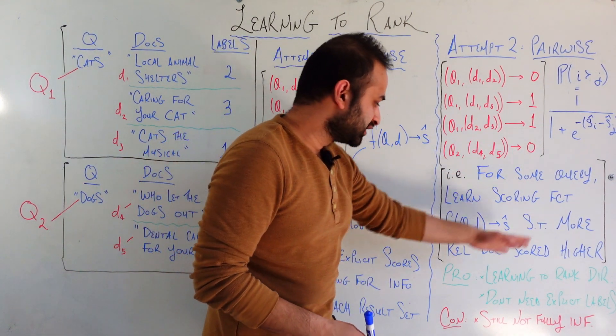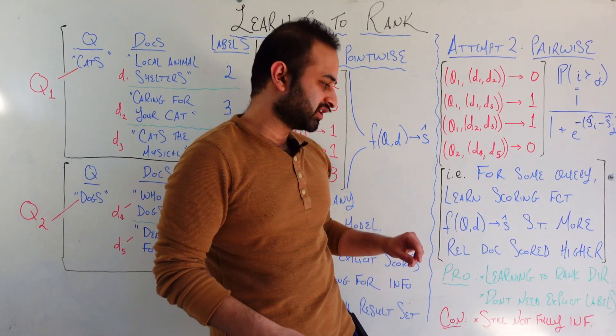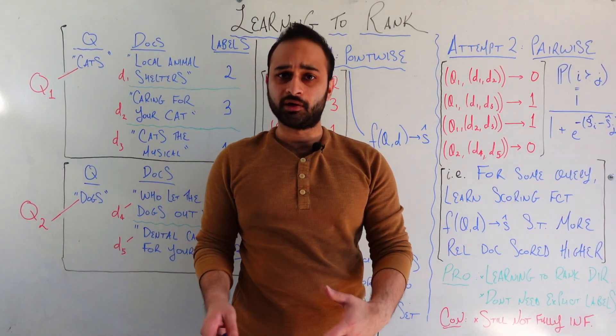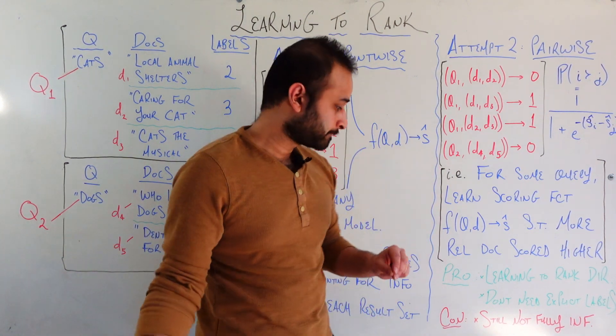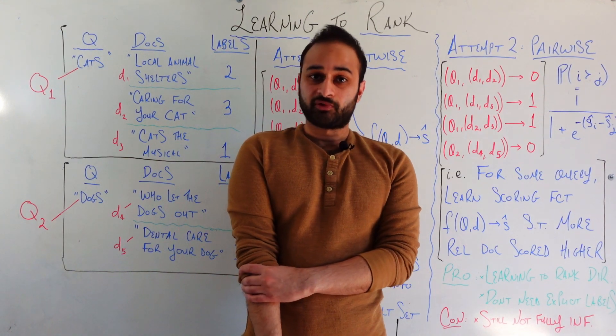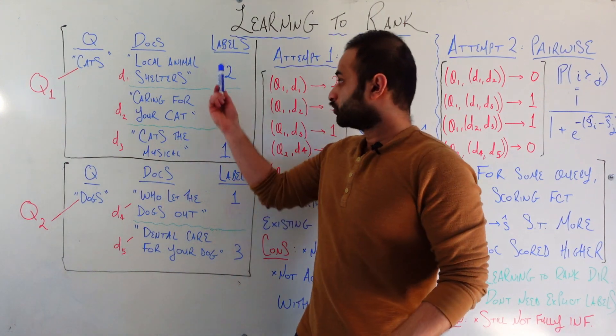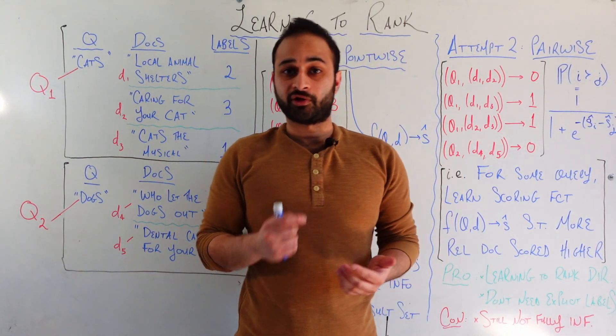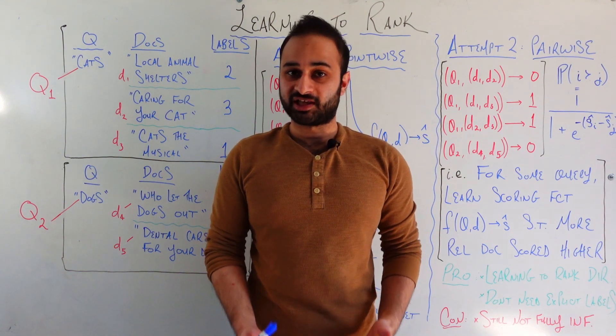And so everything I said is coalesced into this blurb here. The pro here is obviously that we're directly learning to rank. We're taking the relative rankings directly into account in the model. The other pro is that we don't need explicit labels here. For example, notice that our labels are just binary, so we don't need to know what the actual ratings here are. We just need to know whether one rating is higher than the other. That can be a big win in many situations where it's hard to get these labels.